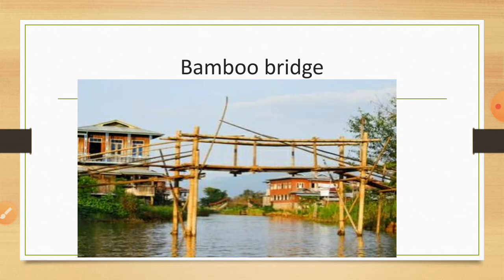How do they cross the water bodies? The children hold their books in one hand and the bamboo with the other. They also use rope bridges to cross water bodies in Assam.